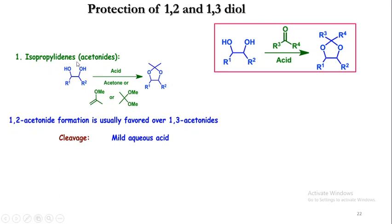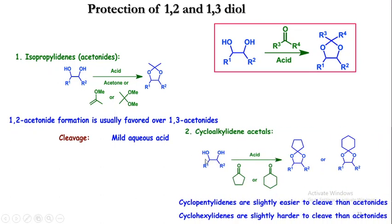The diols are easily protected by means of a cyclic acetal using acetone, or generally vinyl ether or methyl ketone, to form the acetonide. The 1,2-acetonide formation is usually favored over the 1,3-acetonide, and it can be cleaved or deprotected by means of mild aqueous conditions. The 1,3-acetonide is obtained from the 1,3-diol.